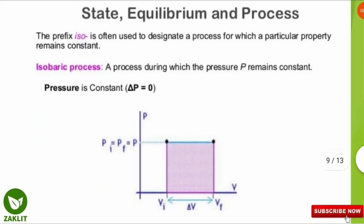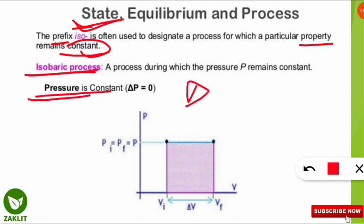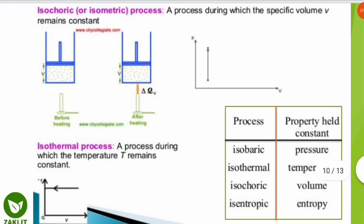Now we will know about state, equilibrium, and process in thermodynamics. The prefix 'iso' designates a property that remains constant. In the isobaric process, pressure is constant — delta P equals zero. The graph shows volume increasing while pressure remains the same. In the isochoric (or isometric) process, the specific volume remains constant; in the graph, volume stays the same while pressure increases.